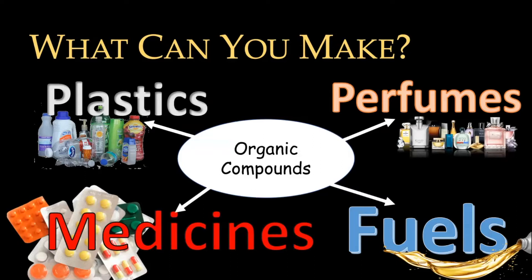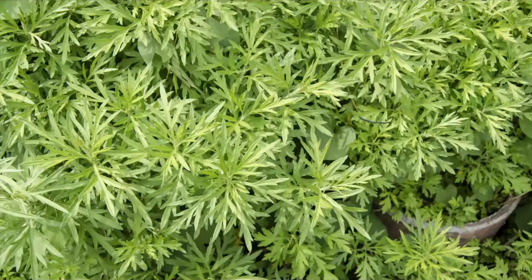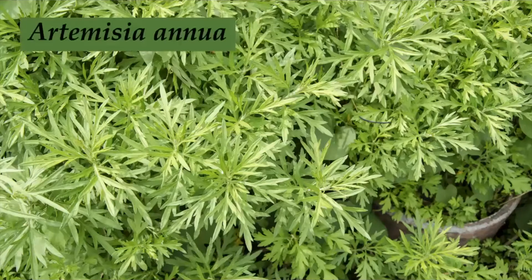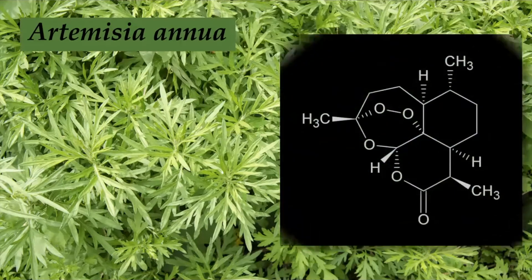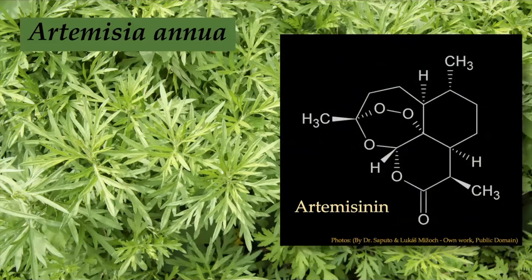This plant is called wormwood, genus Artemisia, species annua — Artemisia annua. It produces a compound called artemisinin, which was found to be an anti-malarial drug. Rather than growing huge amounts of the plant, some folks in Berkeley synthesized artemisinin by integrating the necessary enzymes into a small organism, producing it more efficiently.